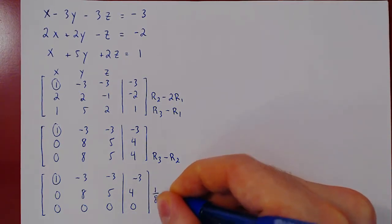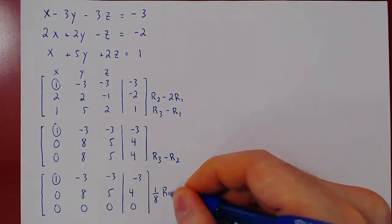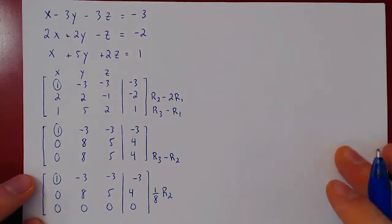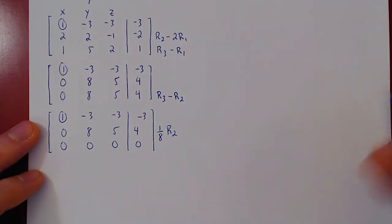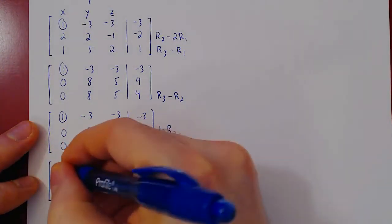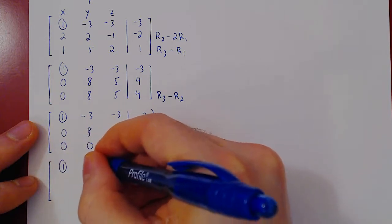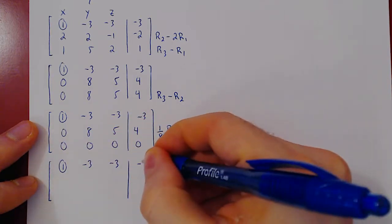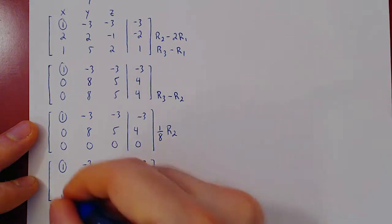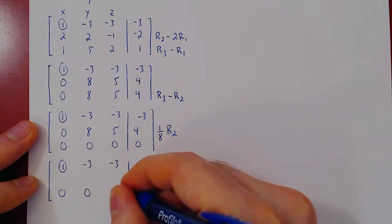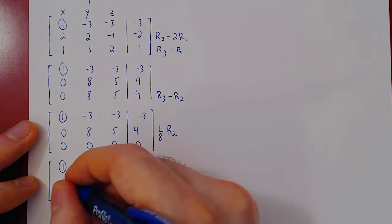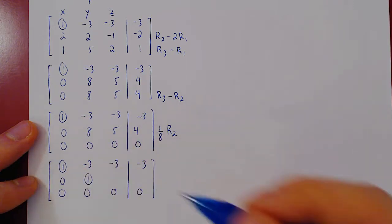And now we get our second leading one by multiplying row 2 by 1 over 8. And we'll get 0, 1, our second leading one.